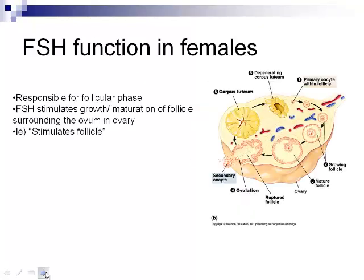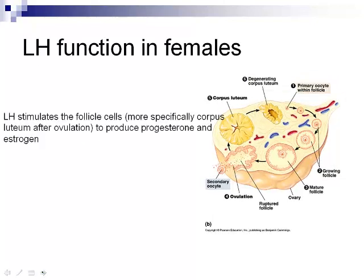Let's look at what FSH does in females. It's similar in function but produces different results — it's responsible for the follicular phase. It stimulates the maturation and growth of the follicle. When FSH is released into the bloodstream, it targets the ovaries and more specifically the follicle, which continues to develop and mature until it eventually bursts and releases the egg — that's ovulation. FSH is directly related to stimulating the follicle, which is why it stands for follicle stimulating hormone.